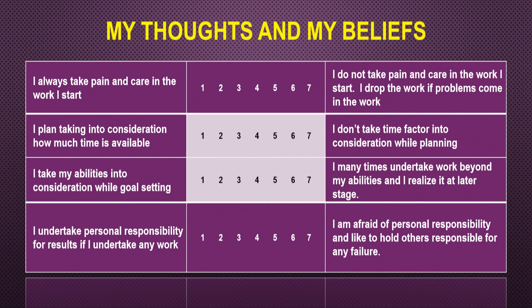These are the next four statements. The fifth pair says: I always take pain and care in the work I start; right hand side says I do not take pain and care in the work I start, I drop the work if problems come. The sixth is: I plan taking into consideration how much time is available — you are conscious of time; right hand side says I do not take time factor into consideration while planning. The seventh pair says: I take my abilities and capabilities into consideration while goal setting; right hand side says I many times undertake work beyond my abilities and realize it at a later stage. The last is: I undertake personal responsibility for the results of any work I do — whether success or failure I take personal responsibility. Right hand side says I am afraid of personal responsibility and like to hold others responsible for my failure.